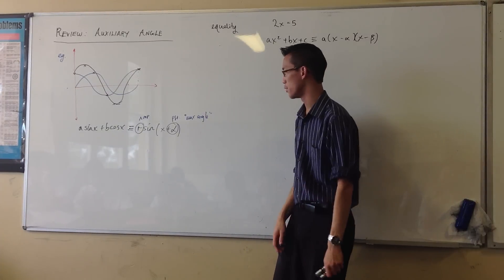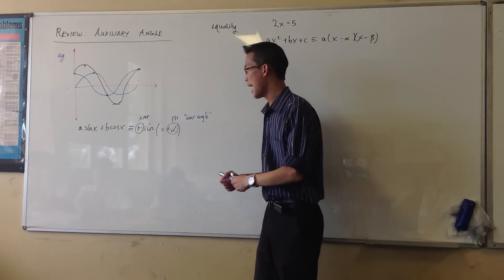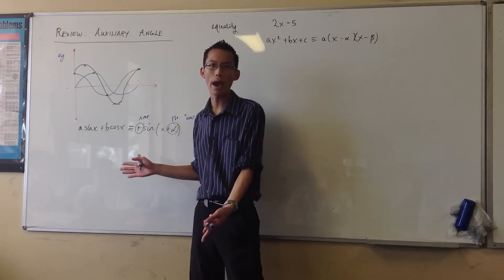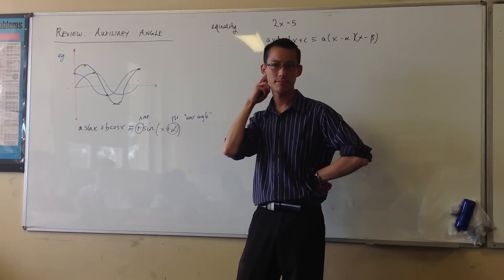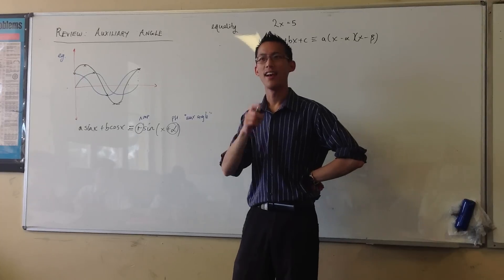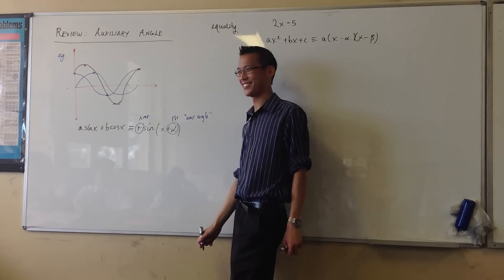So seeing as this is review, let's go through this really quickly. How do you actually come up with the way—what's the way that we work out what these two values are? Do you remember? Coefficient equality. Good. Coefficient equality. That's right.